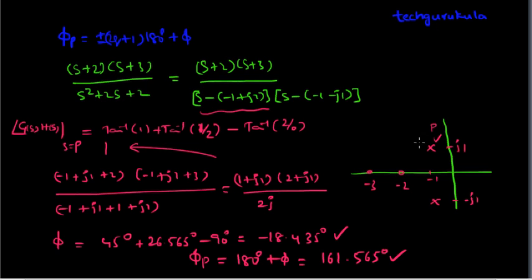We can represent this on the S-plane plot: the 90 degree line is vertical, and 161.565 degrees will be somewhere just past it. The root locus starts from the open loop pole and goes in this direction. Because the root locus is symmetric around the sigma axis, the conjugate pole gives a mirror image branch.